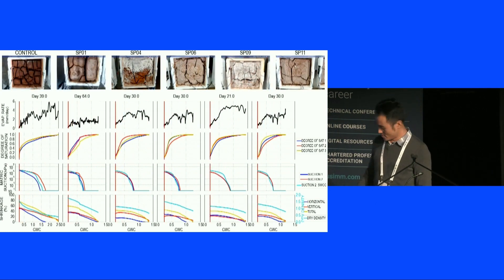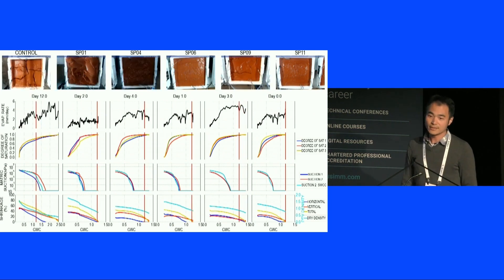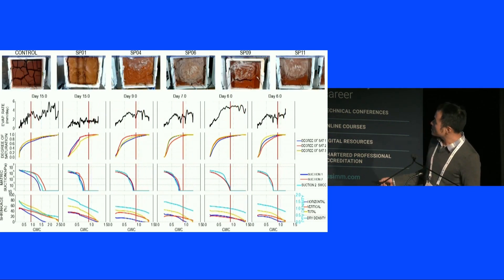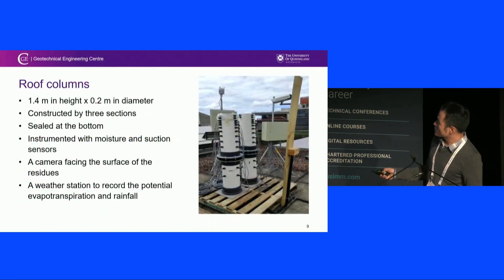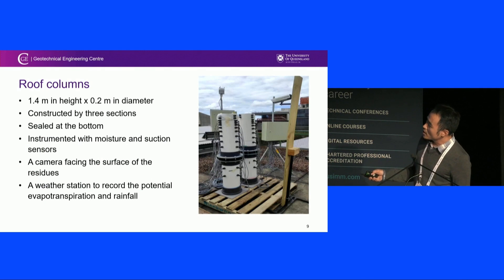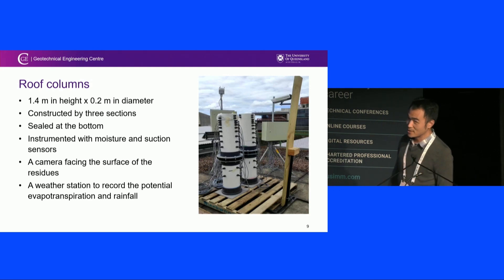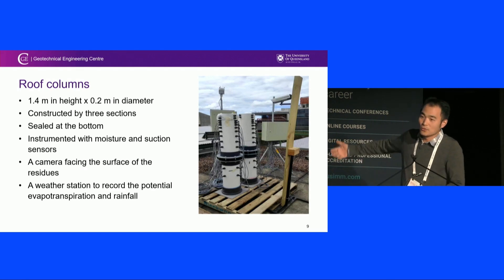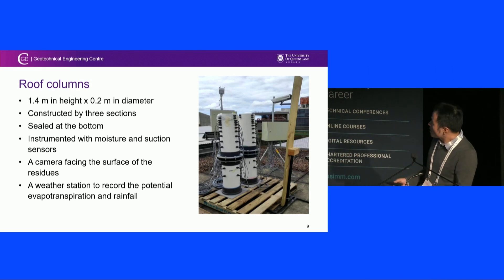Now we start to scratch our heads. What is really the difference? Well, why don't we just give it a try outdoors and see if there's any differences? What we did is construct those large columns. These columns are exposed to the atmosphere and have a height of 1.4 meters, 0.2 meters in diameter, and were constructed by three sections. The reason we need to do that is because if you make it relatively deep, you wouldn't be able to use any tools to scoop the tailings out.